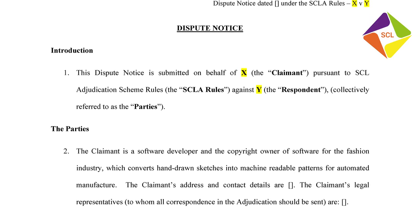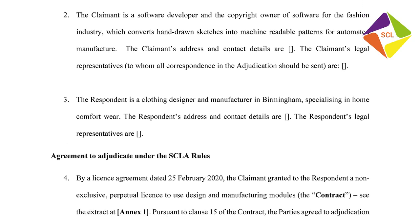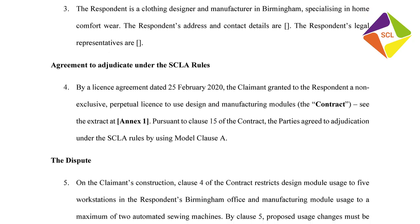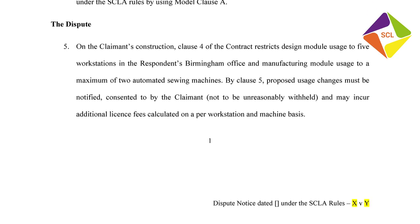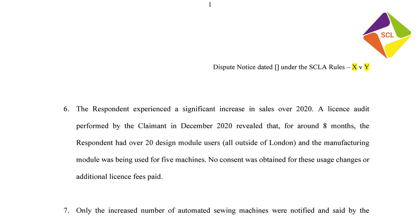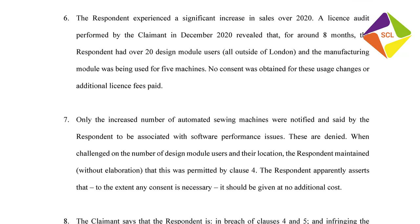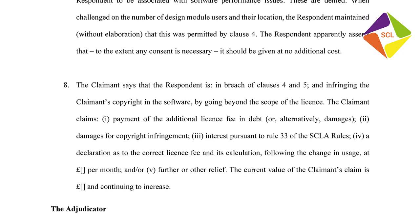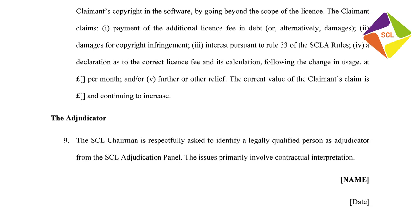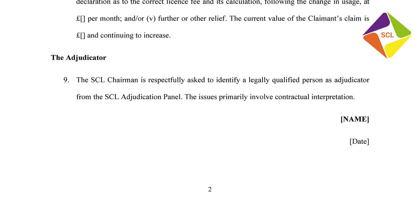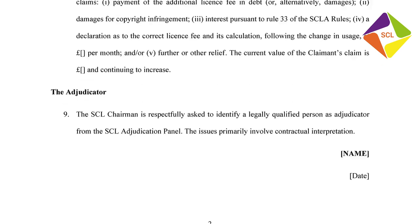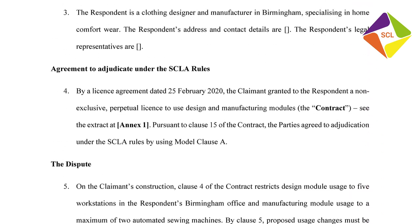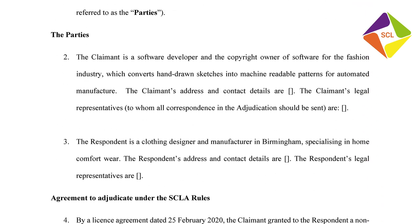Bringing up on screen the draft dispute notice, you can see a way of doing this — it's a little long, and if we fill in all the square brackets we might tip over the two-page limit, but it gives a flavour of how punchy these documents need to be. Just rattling through and making sure I've covered each of those prescribed matters: I introduce the parties, set out their contact details and addresses, their external representatives, and then the agreement to adjudicate at paragraph four, with a reference to annex one, which is required under rule 3.1 to attach evidence of the agreement to adjudicate.